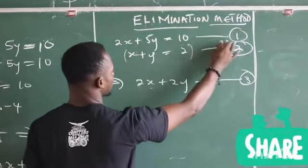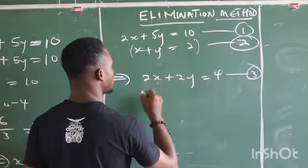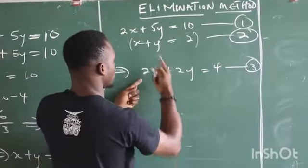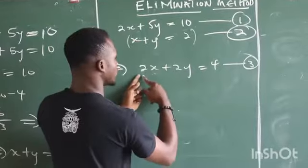The other equation we have here is equation 1. You see that in equation 1, I have 2x and equation 3 also has 2x.